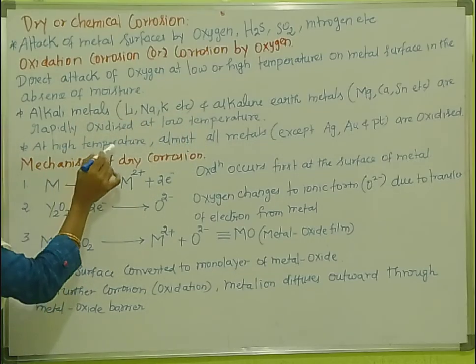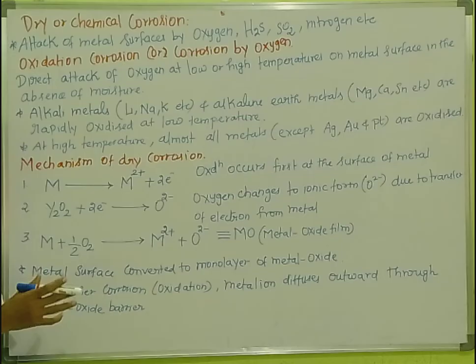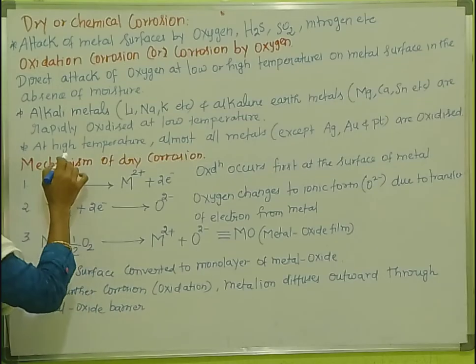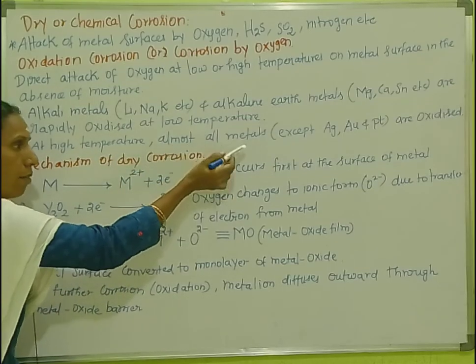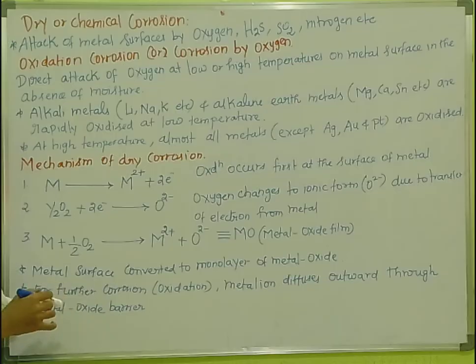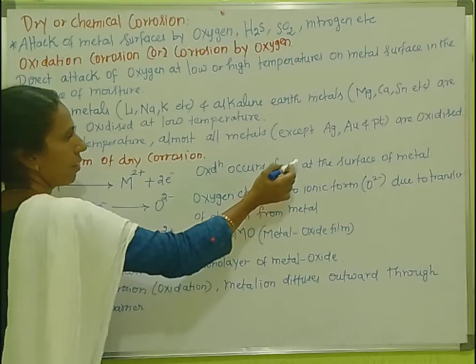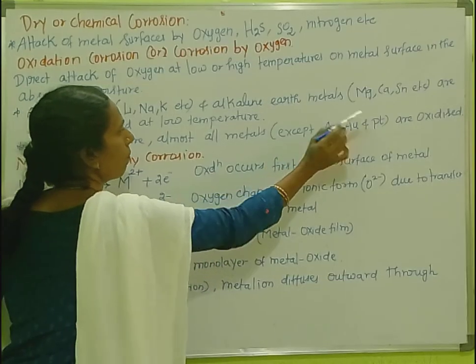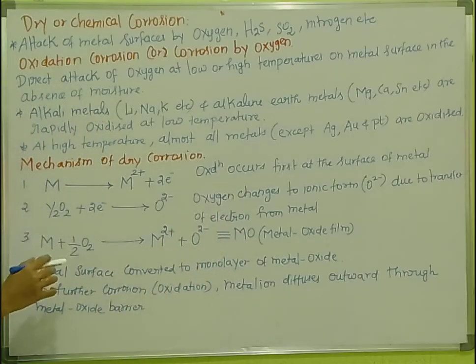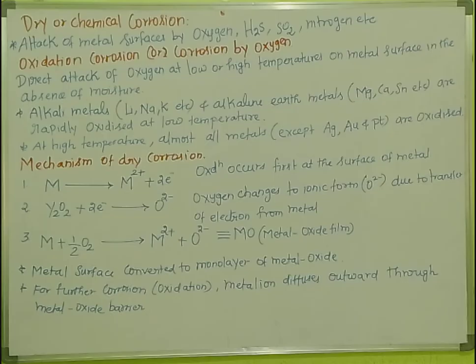At high temperature, it is oxidized. At high temperature, almost all metals except silver, gold, and platinum are oxidized. Silver, gold, and platinum are not oxidized at high temperature. This is oxidation corrosion.